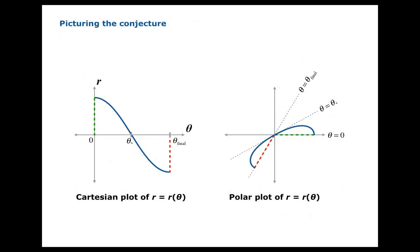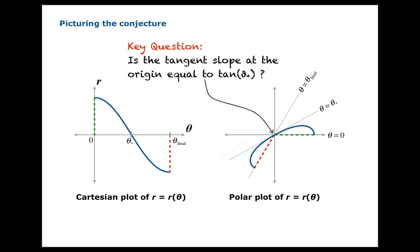Let's picture the conjecture more generally. The Cartesian plot on the left shows a zero at theta star. We want to verify that when we plot the polar curve, there will be an origin crossing with angle of inclination theta star. One way to verify this is to see that the tangent slope is the tangent function evaluated at theta star.